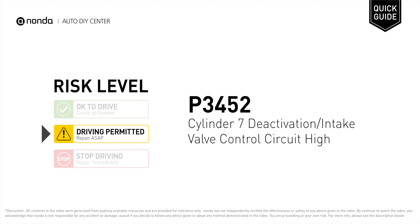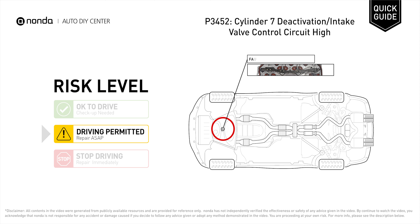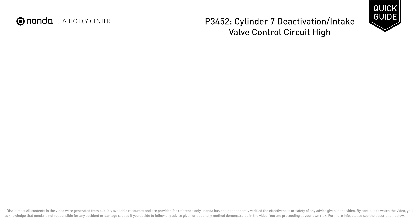P3452 is a diagnostic trouble code for cylinder 7 deactivation or intake valve control circuit high. Under this circumstance, short distance driving is permitted, but your vehicle should be repaired as soon as possible. It indicates that the ECM has detected voltage or resistance inside the cylinder 7 deactivation or intake valve control circuit that is too high.